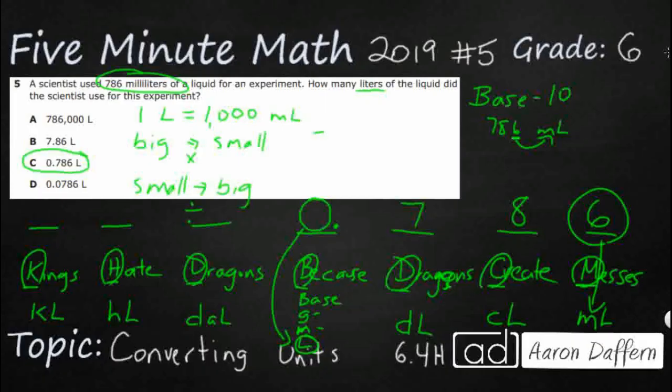In this case, we want to change 786 milliliters into liters. That's going to go from small to big because milliliters are smaller, so we are going to divide. We take 786, divide by 1,000, and guess what we get? 786 thousandths.